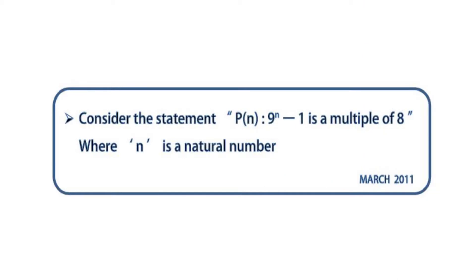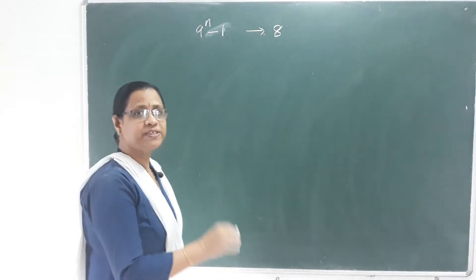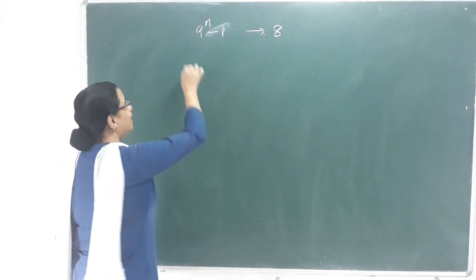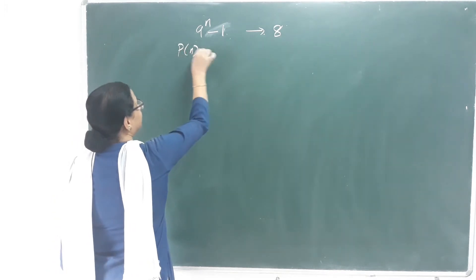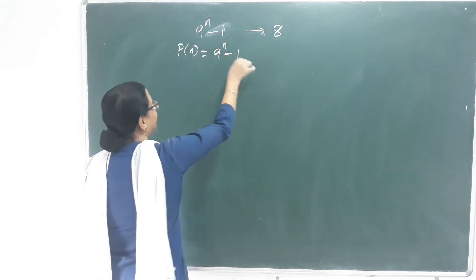Next question. Consider the statement P of N such that 9 raised to N minus 1 is a multiple of 8, where N is a natural number. We will prove it. First, P of N is a statement.